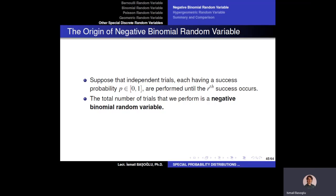This random variable is closely related to the geometric random variable. We again consider independent Bernoulli trials, each ending with success with probability p defined between zero and one. However, this time we are going to perform these experiments until we observe the r-th success. In the geometric random variable, we count the number of Bernoulli trials until we observe our first success. In the negative binomial random variable, we generalize this and stop until we observe our r-th success.